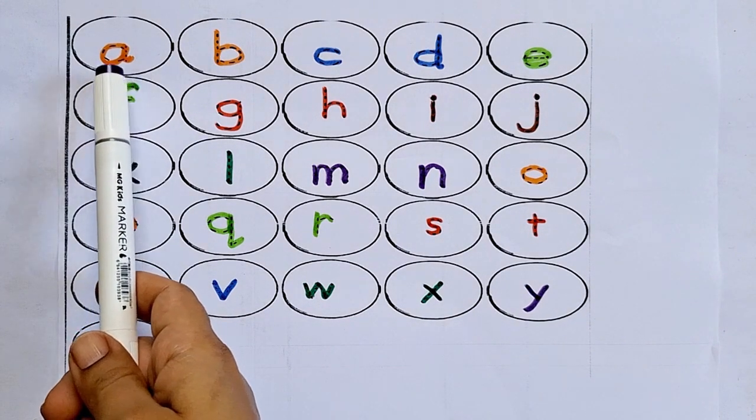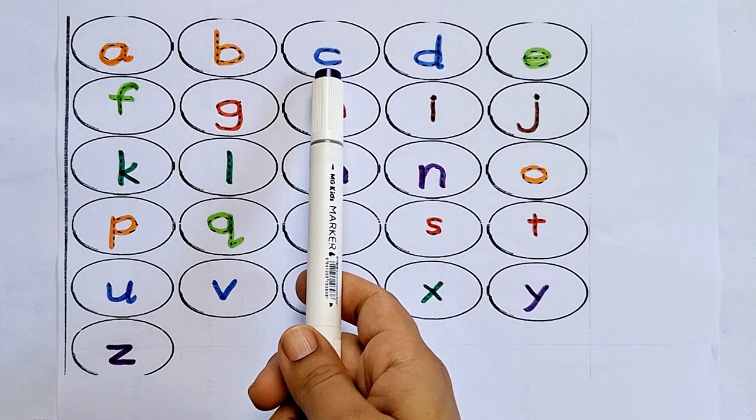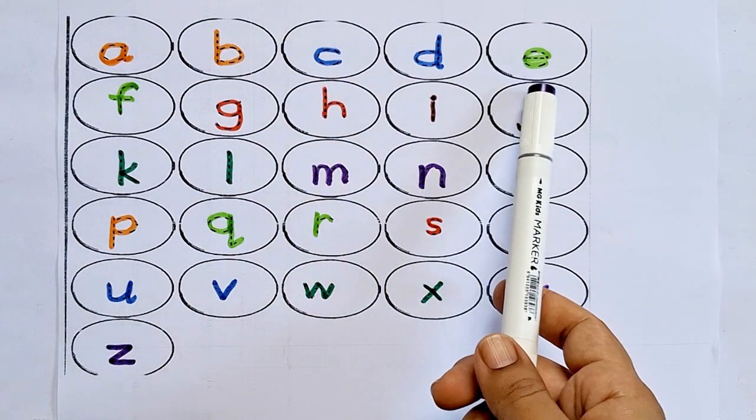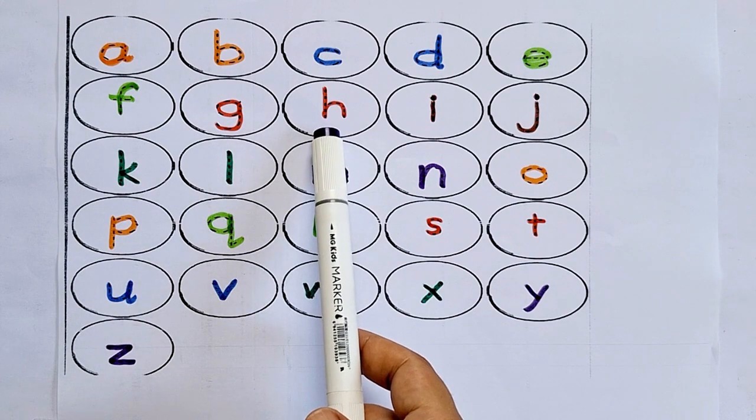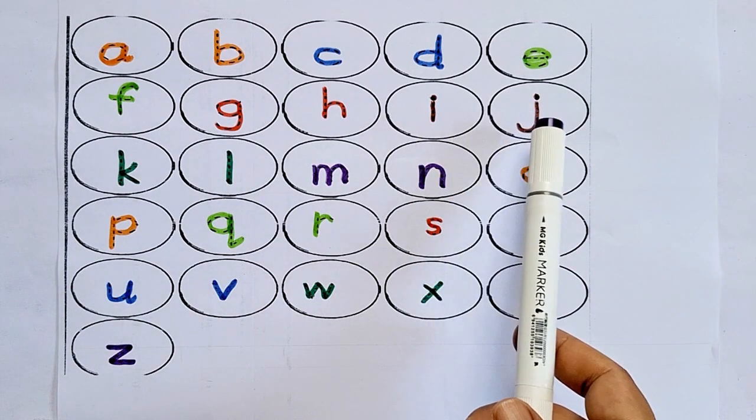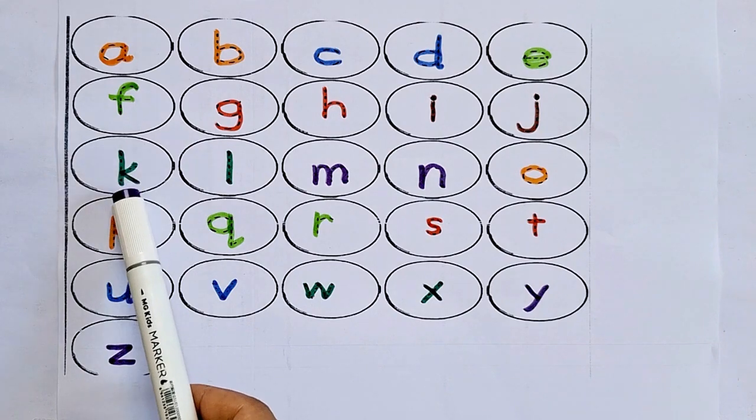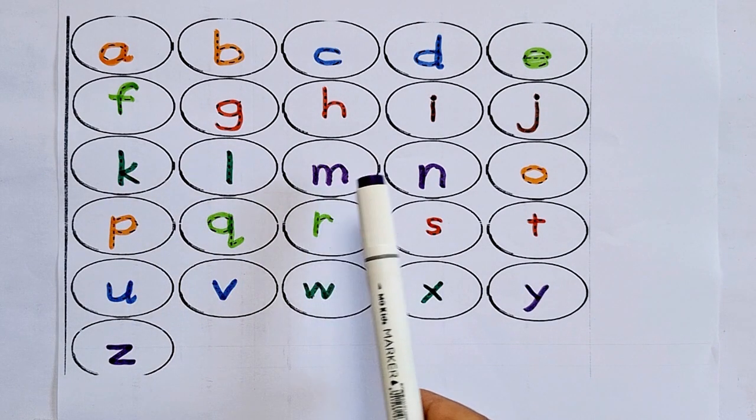Let's review: A for apple, B for ball, C for cat, D for dog, E for elephant, F for fish, G for giraffe, H for hat, I for ice cream, J for jellyfish, K for kangaroo, L for lion, M for monkey.